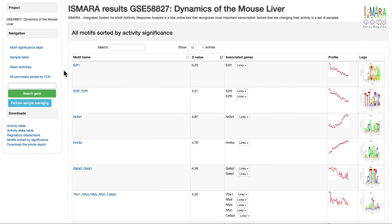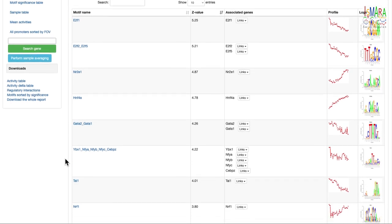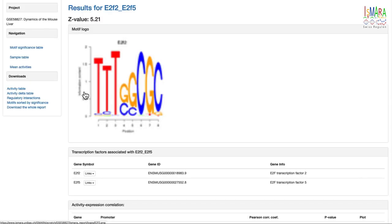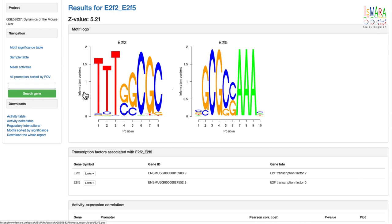When ISMARA analysis of the dataset has finished, the first results page you are taken to looks like this. It shows a list of all motifs that are sorted from top to bottom in order of how significant they are for explaining the expression changes in the dataset. Once we click on a given motif, for example, E2F2_E2F5, we are taken to a page with results for this motif.